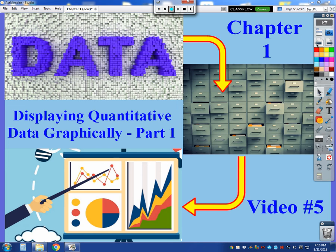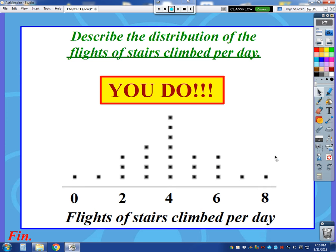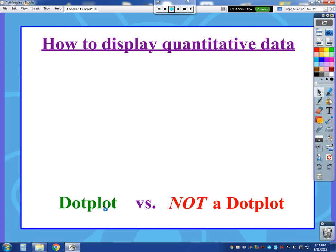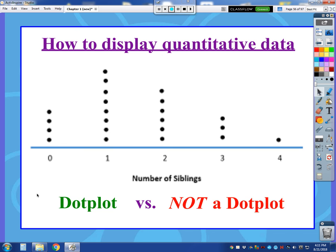At the very end of the last video, I showed you an example where I asked you to describe this distribution, but I didn't really name this type of graph. This type of graph is called a dot plot. Why a dot plot? Because it's made up of dots. Do they have to be dots? No, they don't have to be dots, but a dot plot uses dots. So just be smart about it. Use dots.